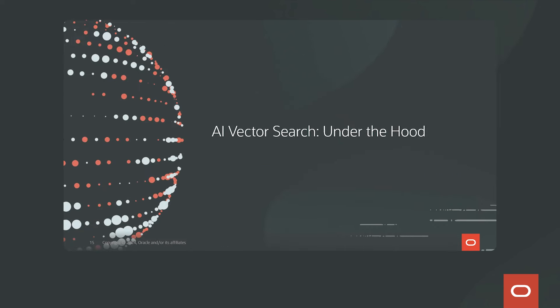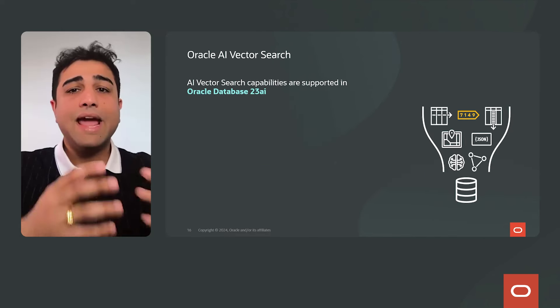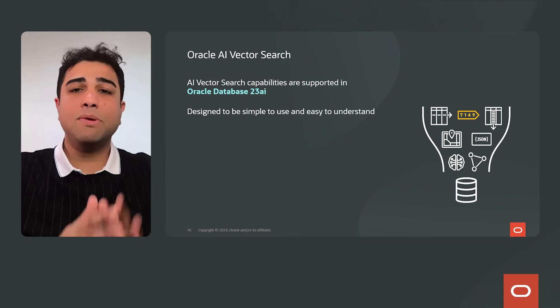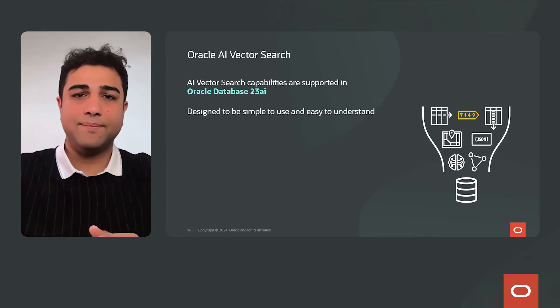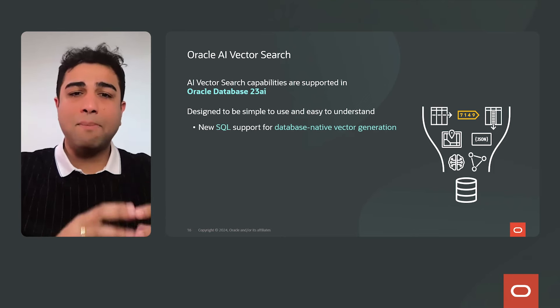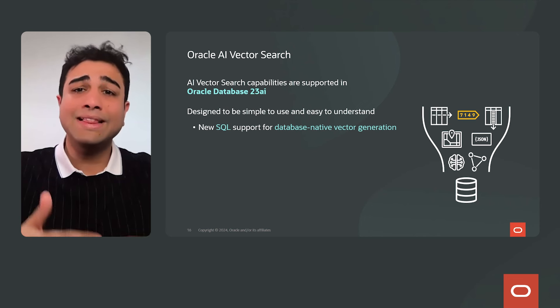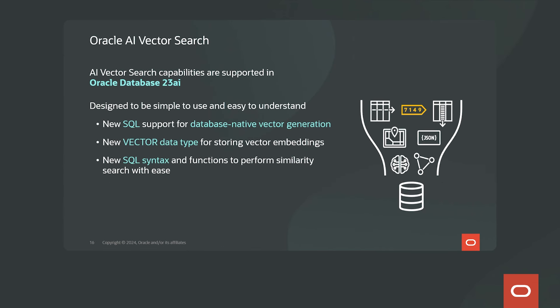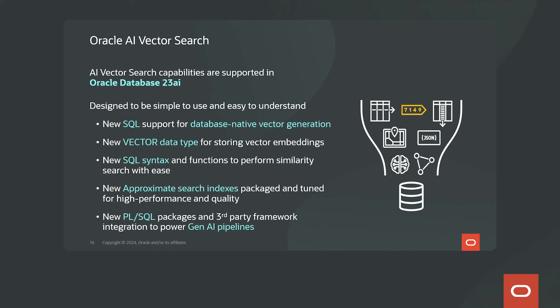Let's look under the hood and see how this works within Oracle Database. AI Vector Search capabilities are fully integrated into Oracle Database 23 AI and designed to be simple to use. We have SQL capabilities for vector generation within the database, a new vector type to store vector embeddings, new SQL syntax and functions to express similarity searches, approximate search indexes to make searches faster, and PL/SQL packages and third-party framework integrations to power Gen AI pipelines.